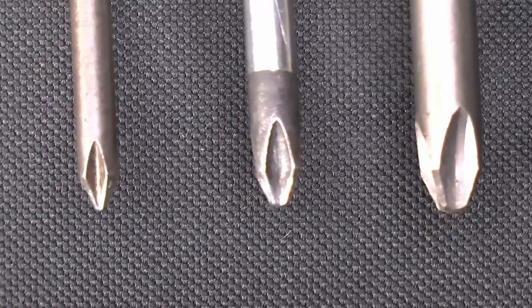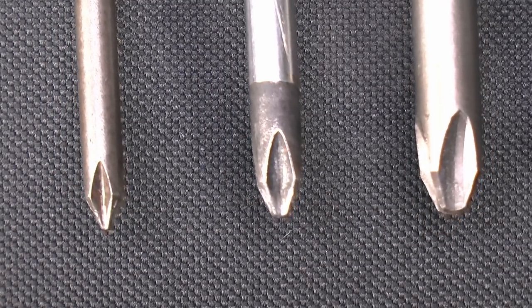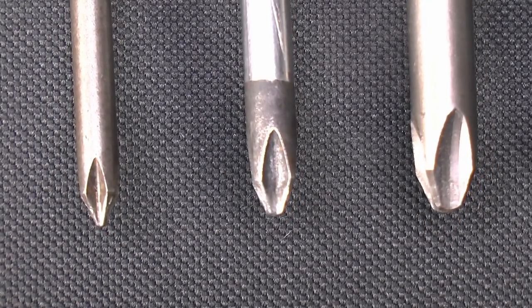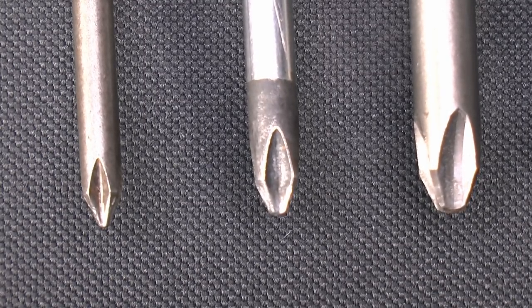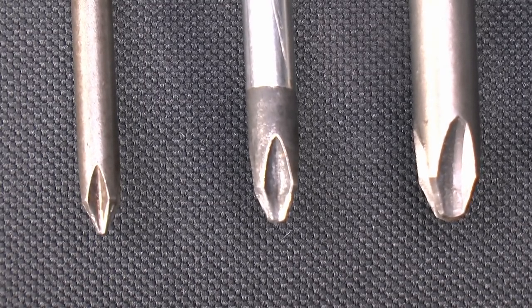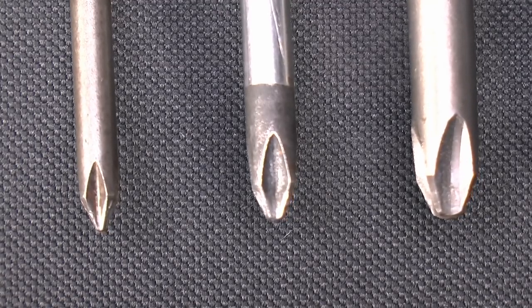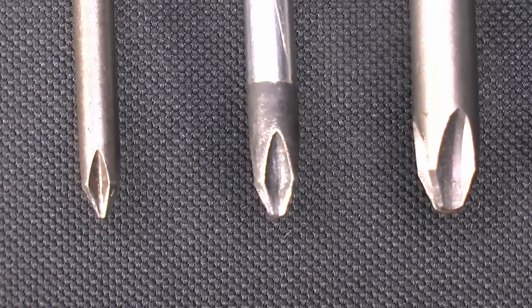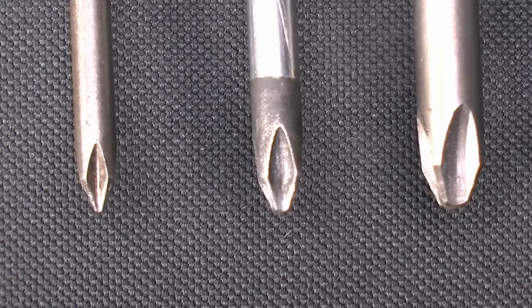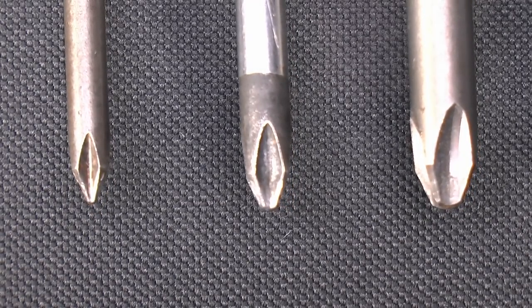And the same applies to the posi ones. They also come in those same set of sizes, one, two and three. Both of these do go lower than that. There's basically a zero, and then there's things like double zero, but those are incredibly small, not going to be normally used in construction type environments. Although you may find them on certain bits of equipment that are fairly small.